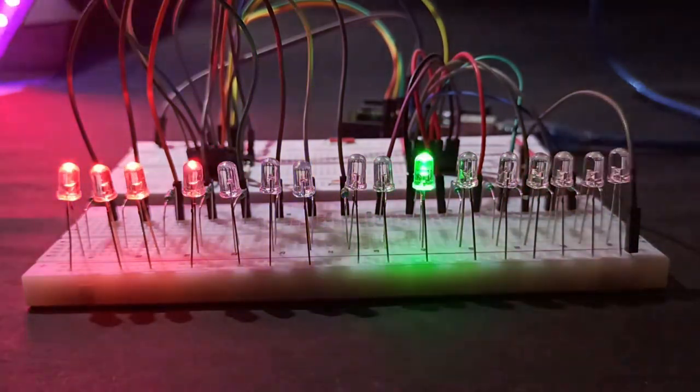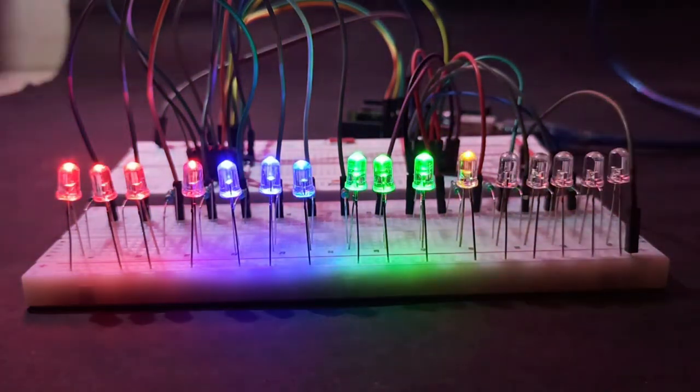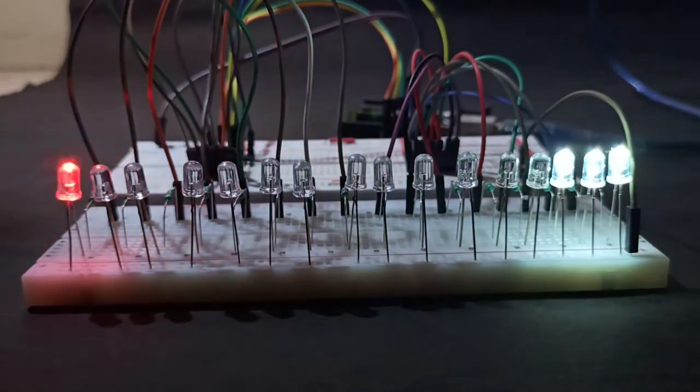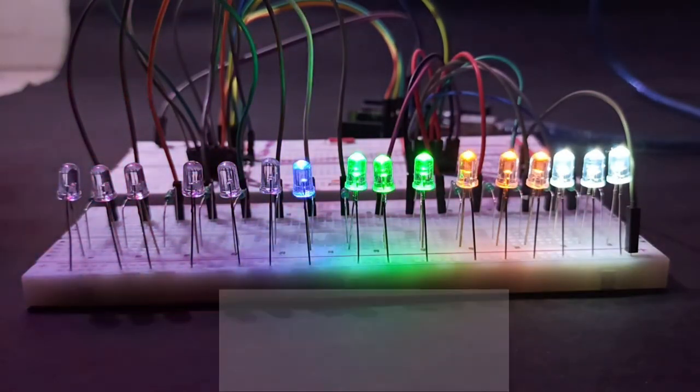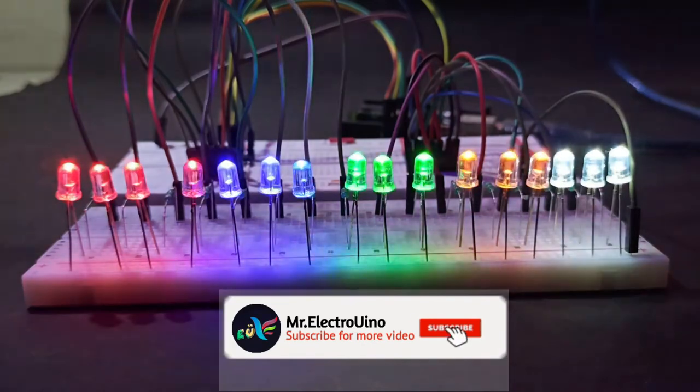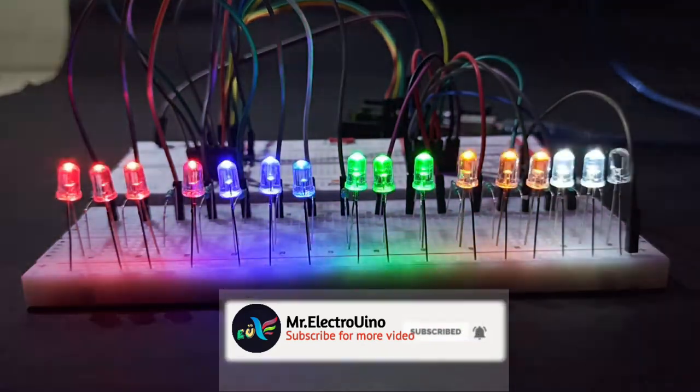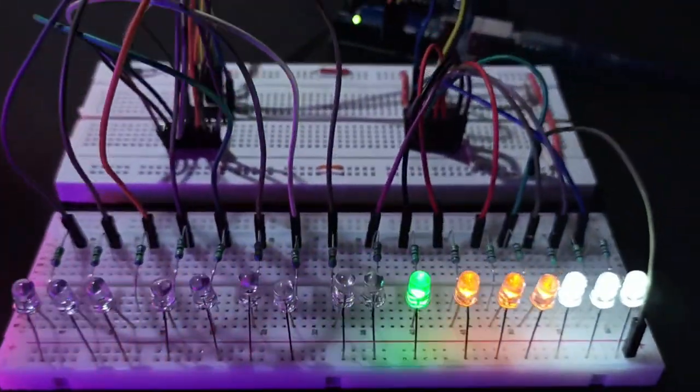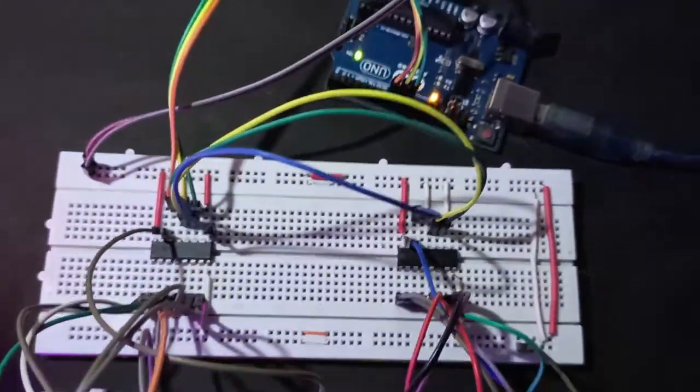In the next part, we will learn how to control the chip register by Arduino Uno. We are using only three Arduino digital pins to control as many LEDs as you want. All you need is a chip register. So do subscribe to learn more. Stay tuned. Bye.